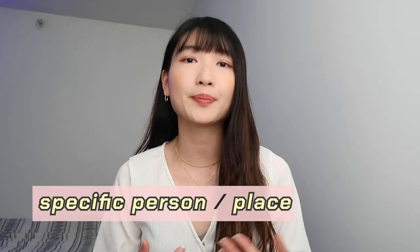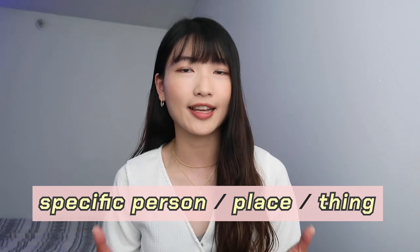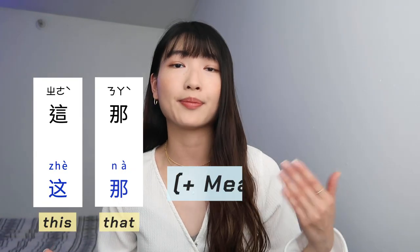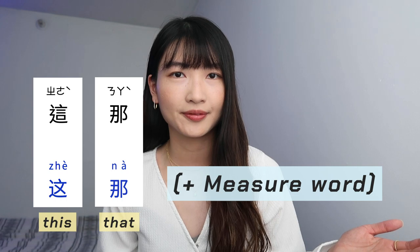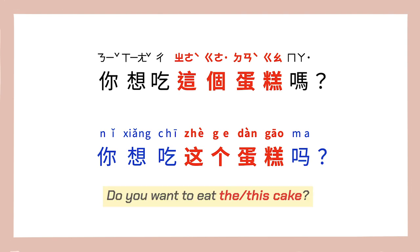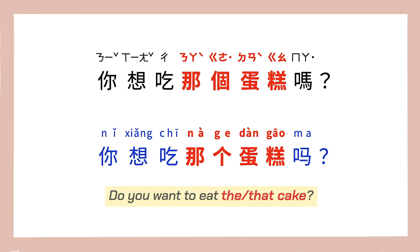In Chinese, when we are talking about a specific person, place or thing, there are several different ways to express this, depending on the context and the meaning you want to convey. The first one is by adding 这 or 那 plus a measure word before the noun. For example, 你想吃这个蛋糕吗? — Do you want to eat the cake? Or 你想吃那个蛋糕吗? — Do you want to eat the cake?